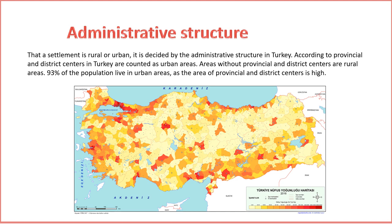4. Administrative Classification of Rural and Urban Settlements in Turkey. We explore the pivotal role that administrative structures play in classifying settlements as either rural or urban in Turkey. The distinction is drawn based on the presence or absence of provincial and district centers. In Turkey, areas encompassing provincial and district centers are classified as urban, serving as administrative hubs overseeing a myriad of services. Areas lacking these administrative centers are categorized as rural. Notably, 93% of the population resides in urban areas, attributed to the extensive coverage of provincial and district centers reflecting their substantial geographical footprint.